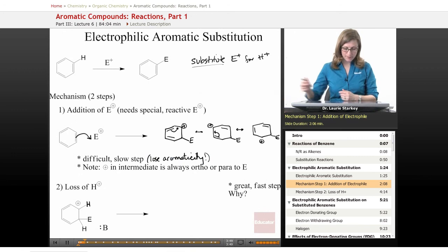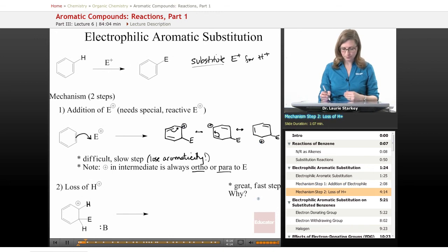And then another thing we can note is that in the intermediate that we have, the positive charge is always going to be either ortho or para to the carbon that added the electrophile. So here's our electrophile. The positive charge is either in an ortho position or the para position or the other ortho position. And again, that pattern will always be true. So that's going to help us be able to draw this mechanism and know we're doing the right thing. That's our first step in the mechanism.